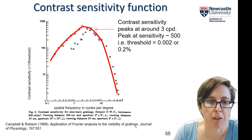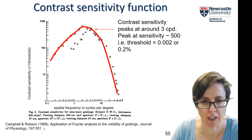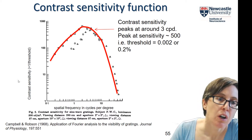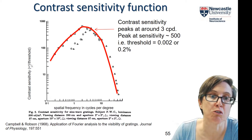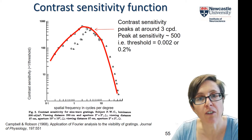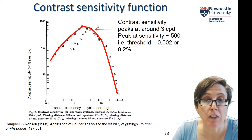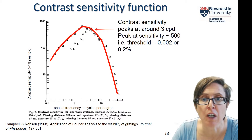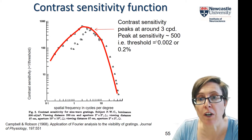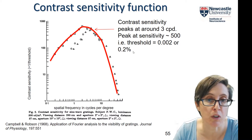Let's look at a real contrast sensitivity function. This is data from the classic paper by Campbell and Robson, 1968. They're plotting Campbell's contrast sensitivity — the reciprocal of his contrast threshold — as a function of spatial frequency in cycles per degree. You can see it has this inverted U shape. The contrast sensitivity peaks at around three cycles per degree, and the peak is around a sensitivity of 500 — so the threshold must be 0.002, or around 0.2%.